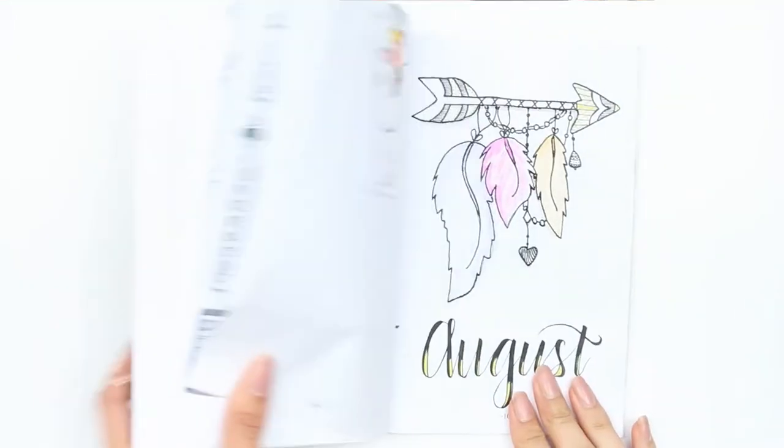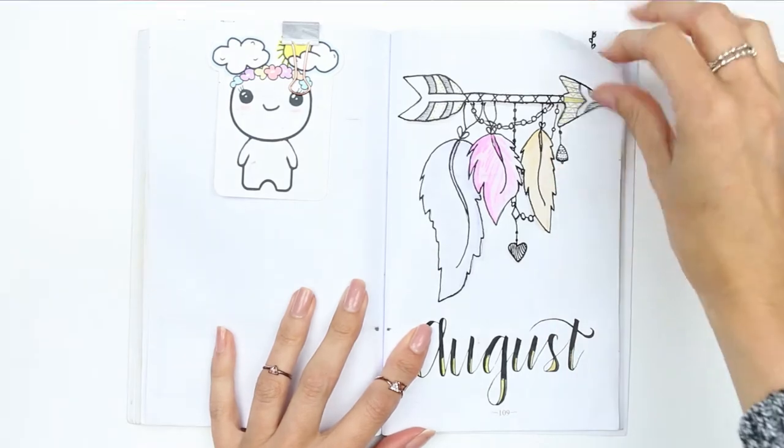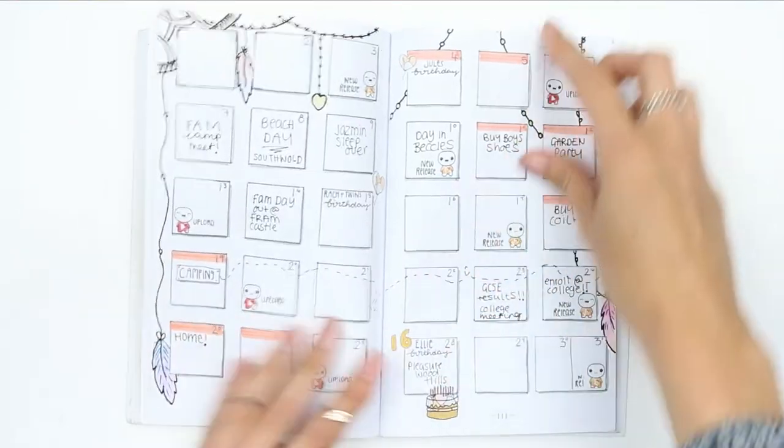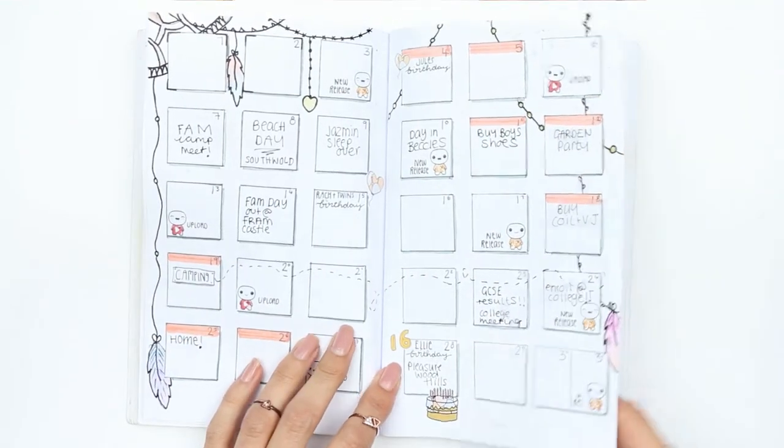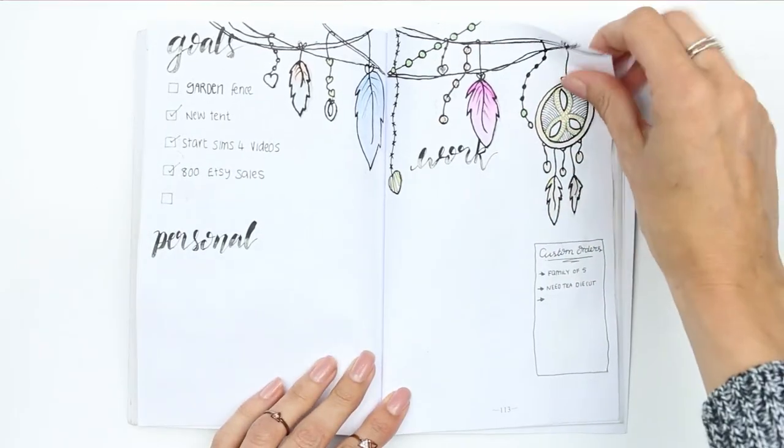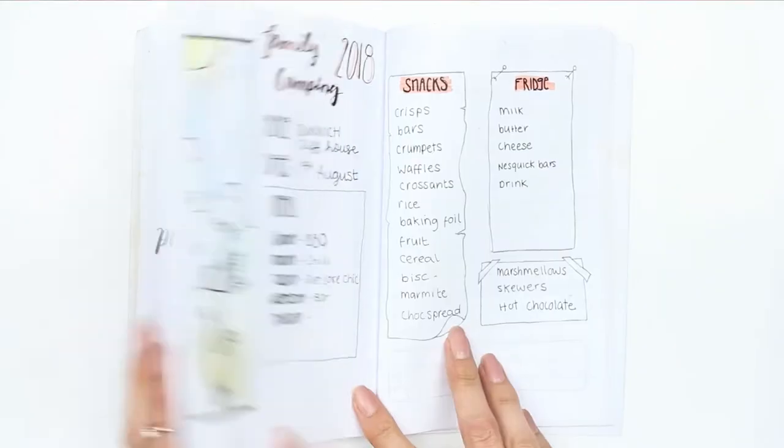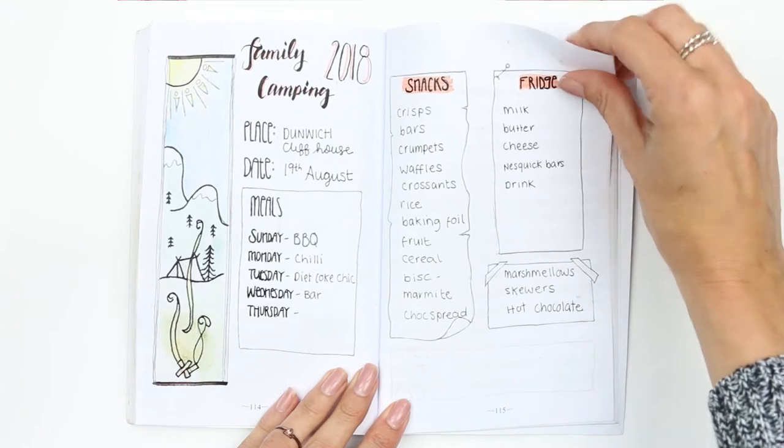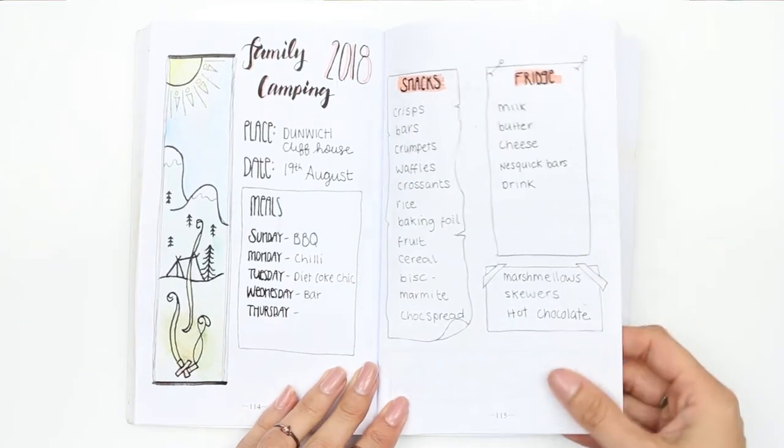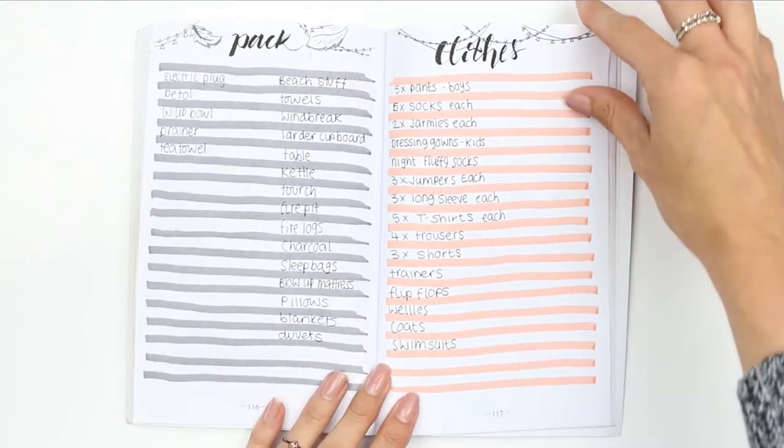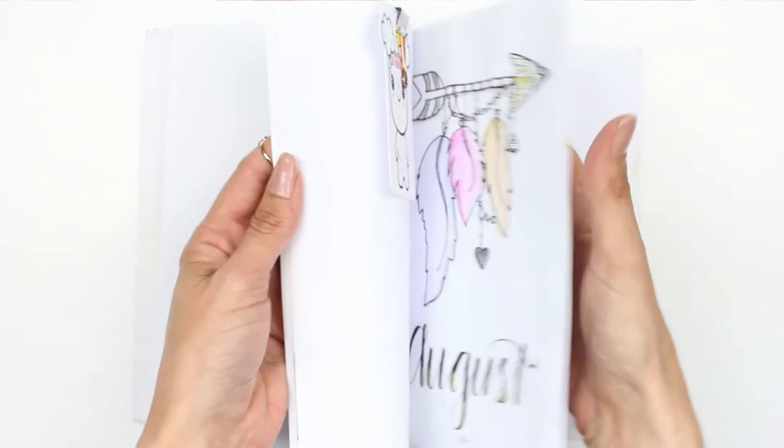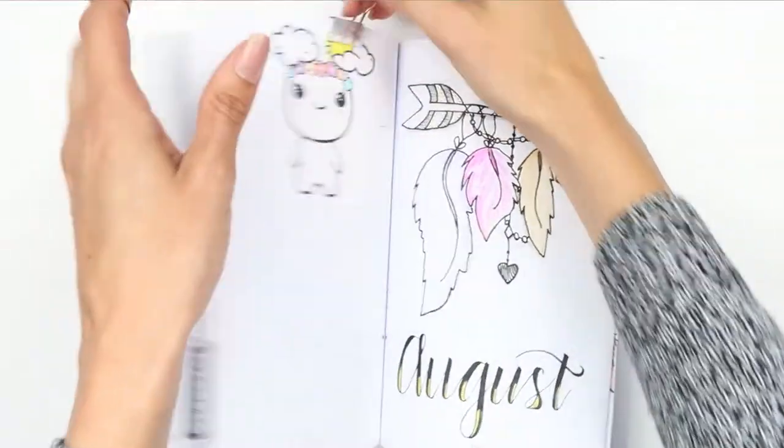Hey everyone, welcome back to my channel and to another bullet journal video. I'm just going to give you a quick flip through of what August looked like because even though I filmed me setting up August, I never edited it or put it out. August was a bit of a hit and miss with me planning wise because I've just got a lot going on in August and I was just too busy. I'm going to be setting up September.